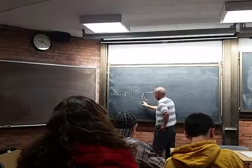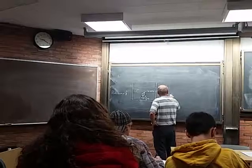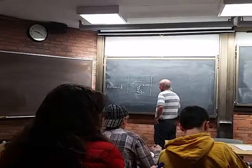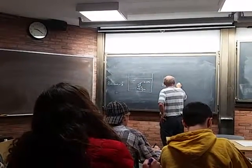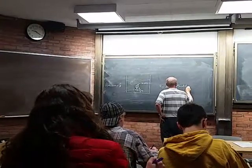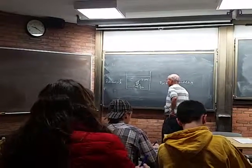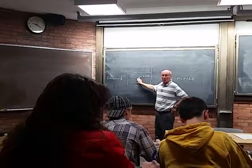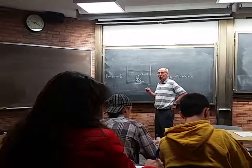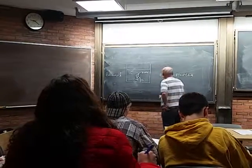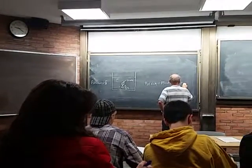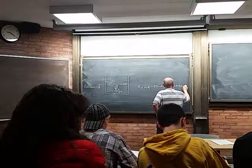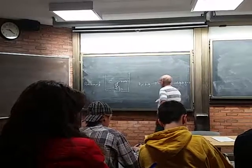Then the forces on this are the pressure at z pointing upward times the area of that box, which is dx dy, minus the pressure at z plus dz, which is pushing down, times dx dy. But that's not all. Because, in addition, you have the weight of the fluid in that box. And that is the mass times the acceleration of gravity. And so, that's down, minus rho times the volume, dx dy dz, times gravity. And the sum is what must be equal to zero.